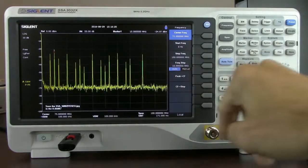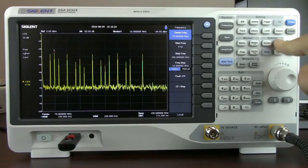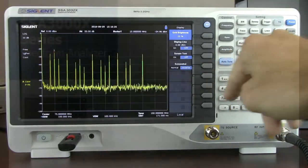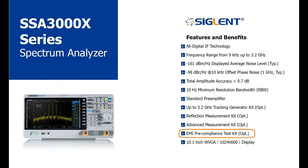But we can also go back to display and we can change that to an inverted image. That's going to save you on ink when you go to print. The next option that I'd like to introduce is the EMI toolkit for the SSA 3000X.